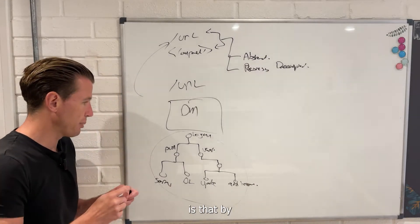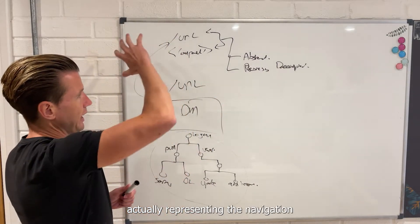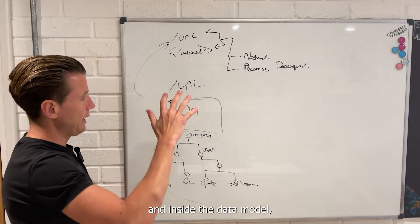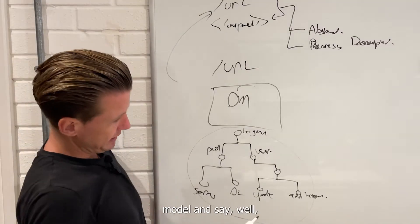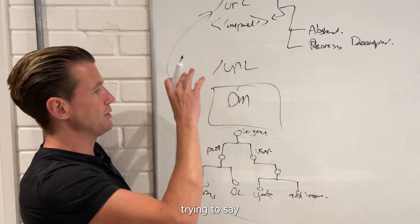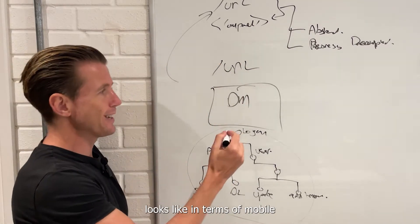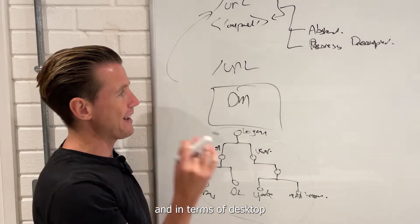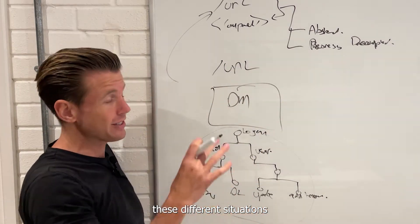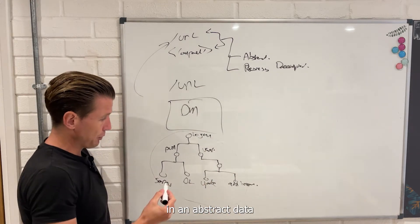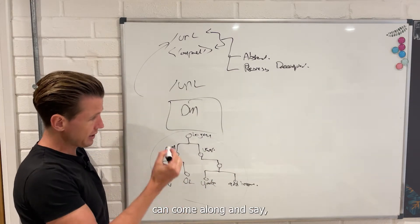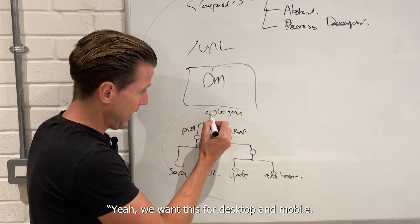What we say is that by actually representing the navigation inside a data model, the business can look at this data model and say, instead of us trying to say what the user interface looks like in terms of mobile, in terms of desktop, and in terms of different situations, and even desktop with different users, what we can do is we can just represent everything in an abstract data model. The business can come along and say, yeah, we want this for desktop and mobile.